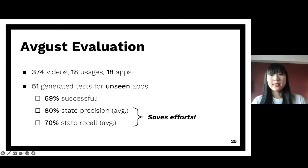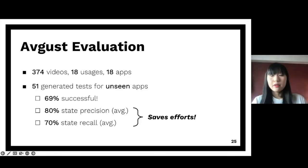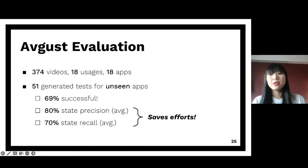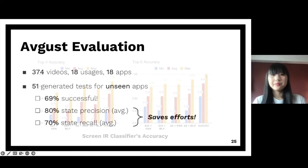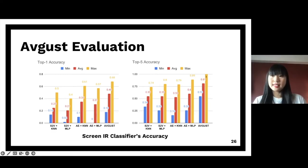To evaluate August, we collected almost 400 videos across 18 common app usages from 18 subject apps. In each usage category, we randomly chose three apps to generate tests for, using videos from other apps to learn from. In the end, 51 tests were generated successfully and almost 70% were successful, meaning they exercised the entire usage correctly. For the remaining unsuccessful tests, they were quite similar to the correct tests, with high state precision and recall — meaning developers can reuse these tests to save effort instead of writing from scratch. Our image classifiers also performed well and can outperform the state of the art.